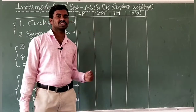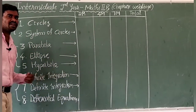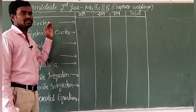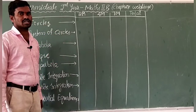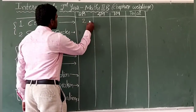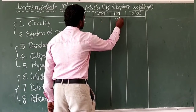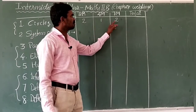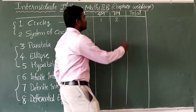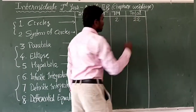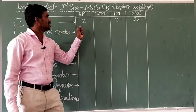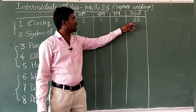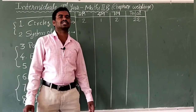From circles — which is an easy chapter — we get two 2-mark questions, one 4-mark question, and two 7-mark questions. That is: 2 twos = 4, plus 4 = 8, plus 2 sevens = 14, totaling 22 marks from this chapter out of 75. If you learn this chapter perfectly, you can easily get 22 marks.